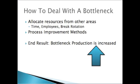The first and most simple way is to allocate resources from other areas. You could have employees work overtime for a little bit, you could add an employee, or you could rotate when your employees take breaks so they can cover that production. You have to be careful with these methods, though. If you have a long-running bottleneck, you don't want to keep paying people overtime or throw extra employees at the problem. Break rotation can cause scheduling issues and might actually irritate the operators on the line.